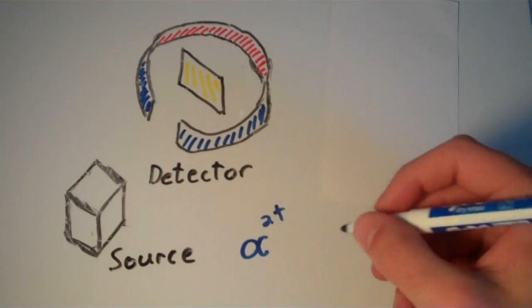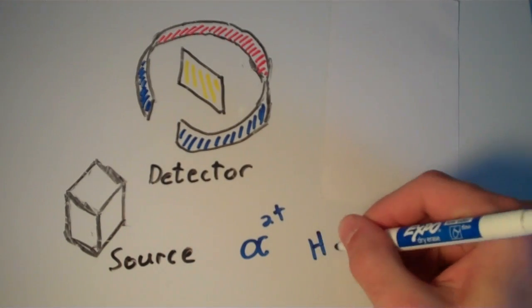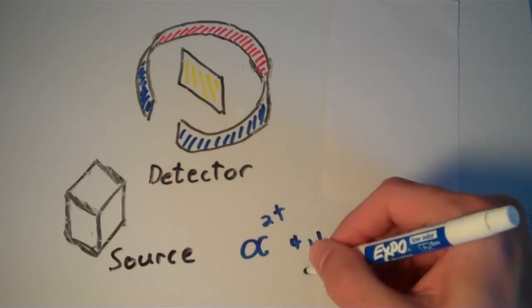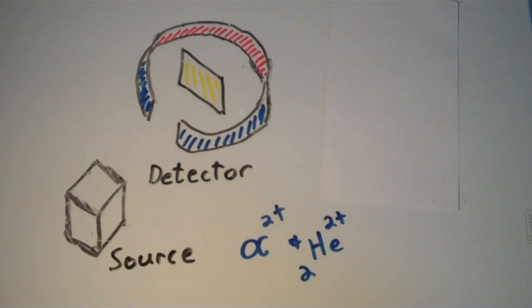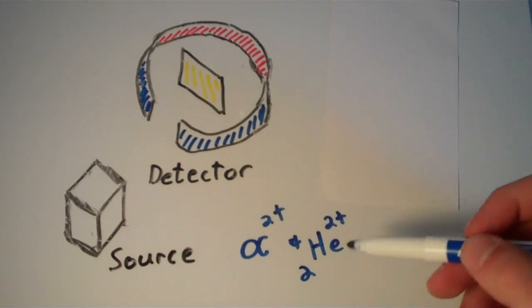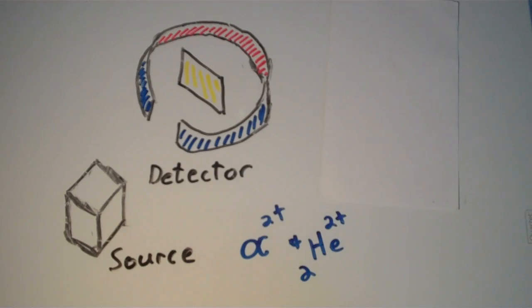And later actually it would be revealed that an alpha particle is actually a helium nucleus. So it can also be written as a helium nucleus that has 2 extra neutrons. So a total mass of 4 and 2 protons and an overall charge of positive 2. But that's not really important.